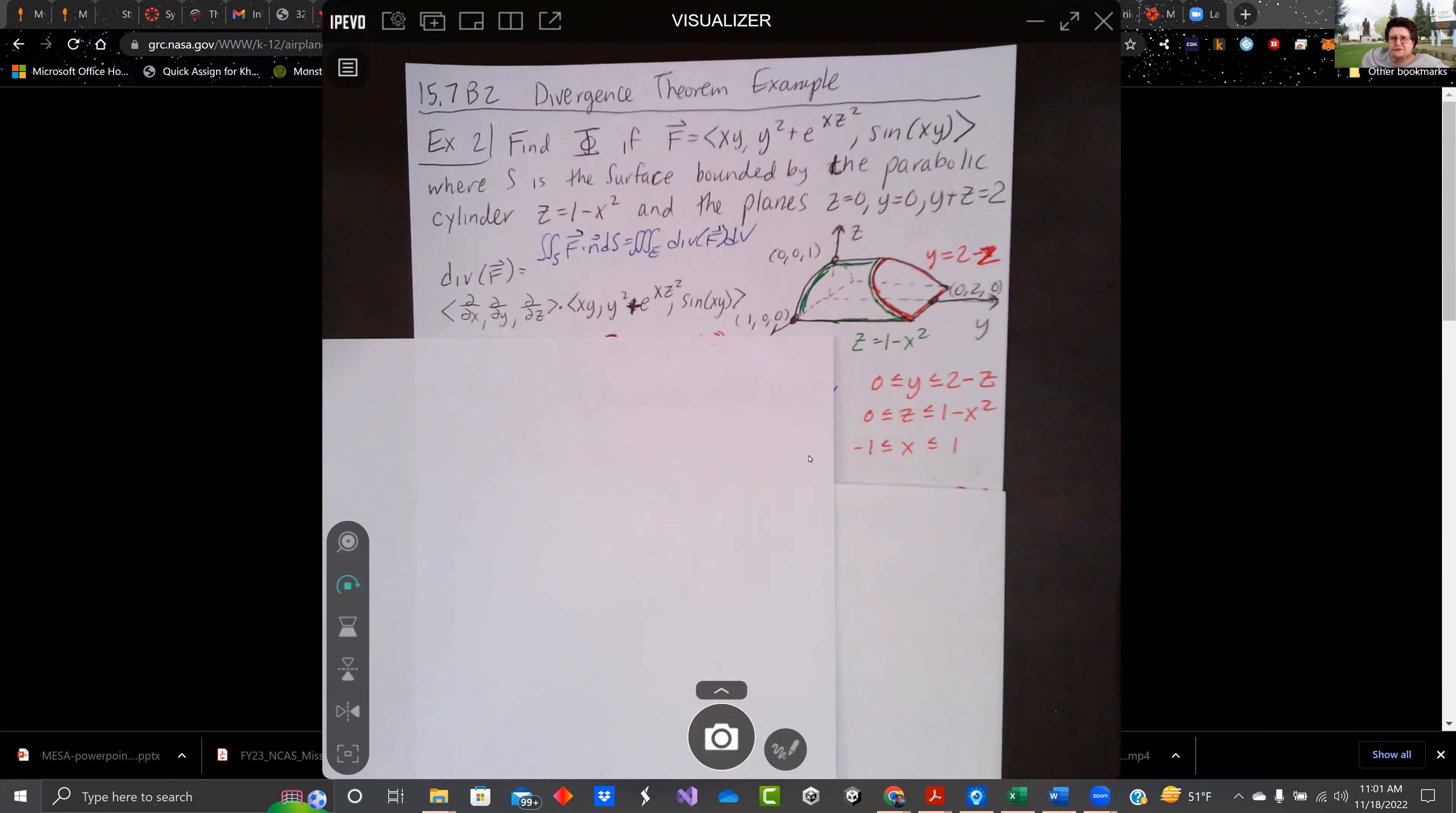S is going to be the surface bounded by the parabolic cylinder, z equals 1 minus x squared. So it's a cylinder that opens along a line that has the y axis as its pipe. And then we have the planes of z equals 0, y equals 0, and then y plus z equals 2.